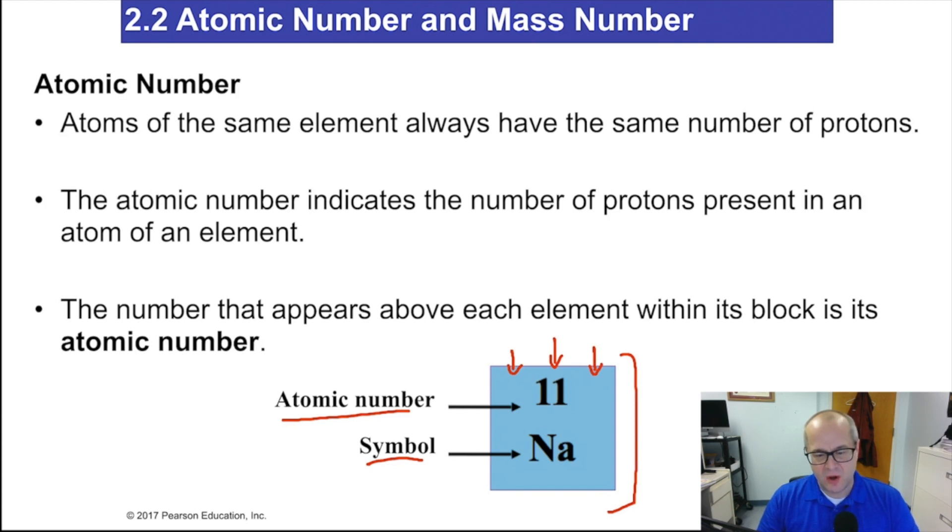Now, the atomic number is always a whole number, and it represents the number of protons in an atom or an ion. The atomic number is the number of protons. Atomic number equals the number of protons.